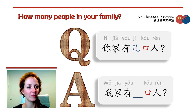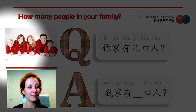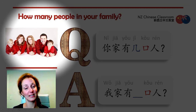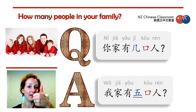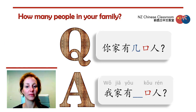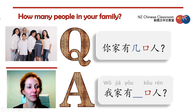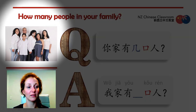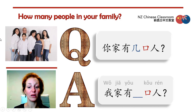Let's have a look at a few examples. 你家有几口人? Let's count: 一,二,三,四,五,六. 我家有五口人. 对不对? 很好! 下一个. Can you ask the question? 你家有几口人? Let's count: 一,二,三,四,五,六. 很好! 我家有六口人. 很好! 下一个.